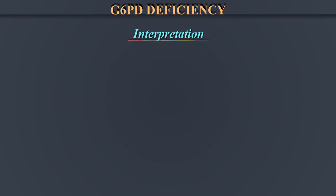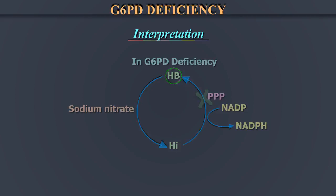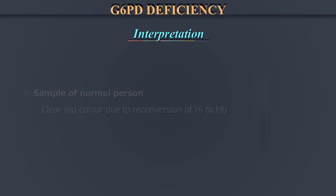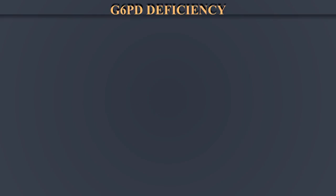Interpretation: In G6PD deficient patients, the block in the pentose phosphate pathway prevents reduction of methemoglobin back to hemoglobin. The sample of a normal person gives a clear red color, while the G6PD deficient sample has a brown color due to the persistence of methemoglobin.